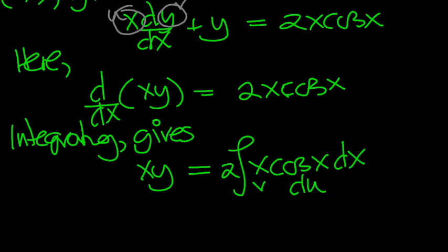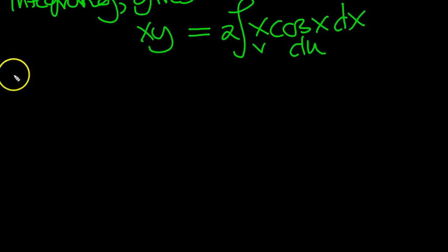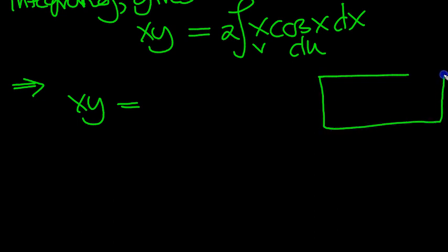So label that v du. And let's do integration by parts then. So we've got xy is equal to... And I'll draw a grid so that we're all happy. So I can refer to the constituent parts of the formula. So we need a u and we need a v. v du, sorry.